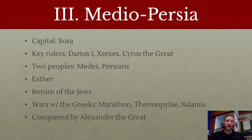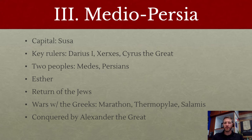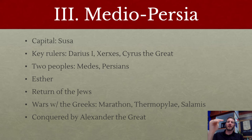That ushers in the third major empire of this lecture — the Medo-Persian Empire. Their capital is the city of Susa, with key rulers Darius I, Xerxes, and Cyrus the Great. The story of Esther takes place while the Jews are in exile under the Persian Empire; many believe the husband she's a concubine for is Xerxes. The Persians will allow the Jews to go back home and rebuild Jerusalem and the temple. When we get to the Greeks, we'll talk about the famous wars between the Greeks and the Persians, and how Persia will eventually fall — as per the statue — to Alexander the Great.